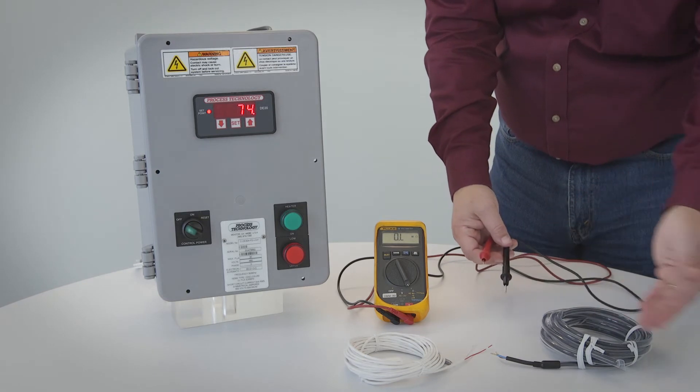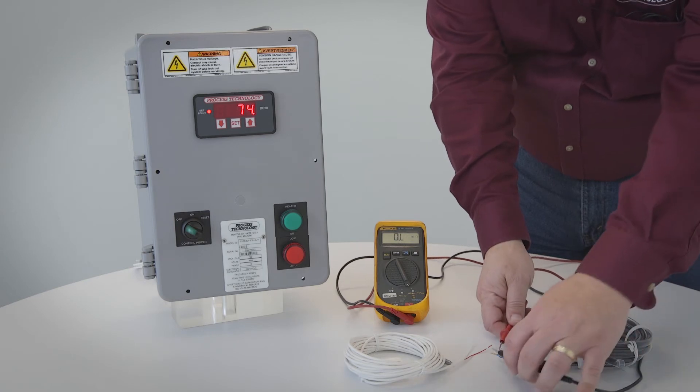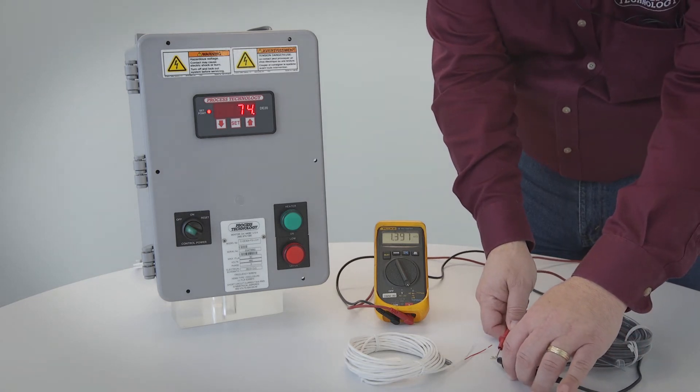The DLC series controllers use a thermistor sensor. This sensor should read around 990 ohms at room temperature.